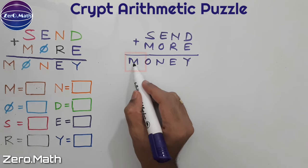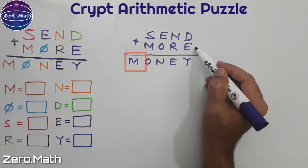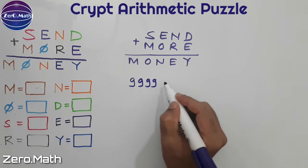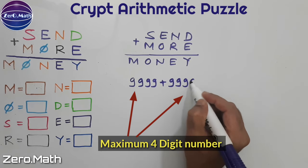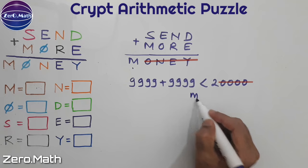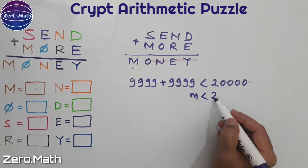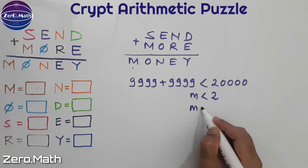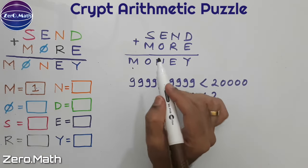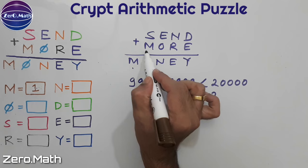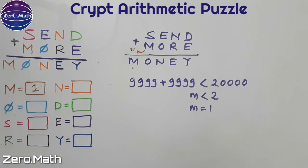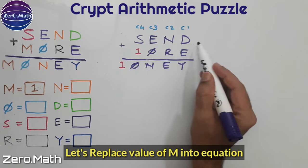Let's try to figure out the value of M first. Both numbers are four-digit numbers, and the maximum four-digit number is 9999. Hence the maximum possible value of the sum will be less than 20000. So M has to be less than 2 — the only possible value is 1. M equals 1. Also, the column S plus M produces a carry of 1, which confirms M is 1.